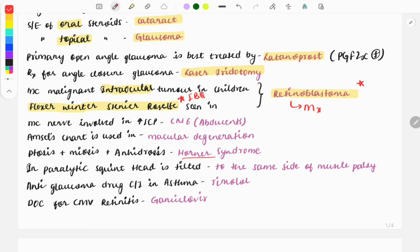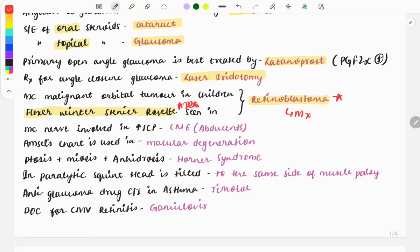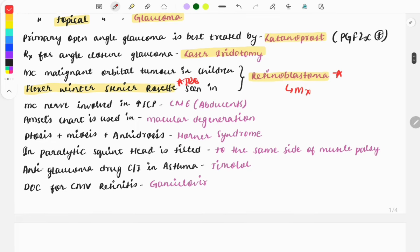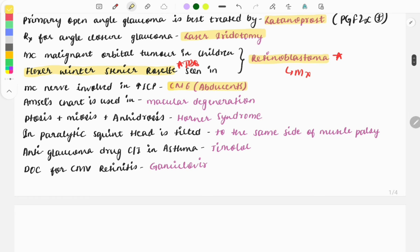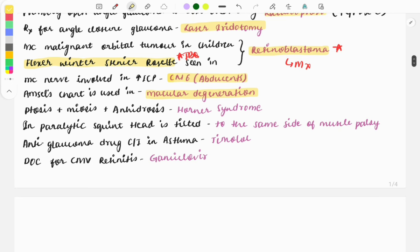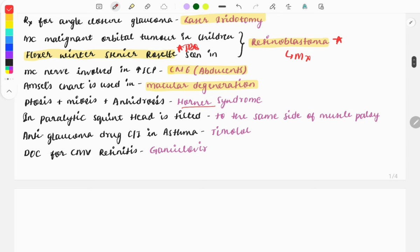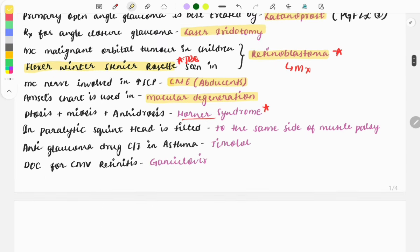The most common nerve involved in raised intracranial pressure is cranial nerve 6, the abducens nerve. Amsler chart is used in macular degeneration. Horner syndrome: the classical triad seen is ptosis, miosis, and anhidrosis. These findings will be described in the question and they will ask you to make the diagnosis.